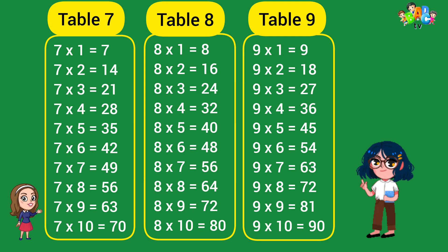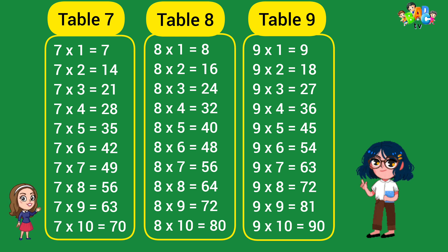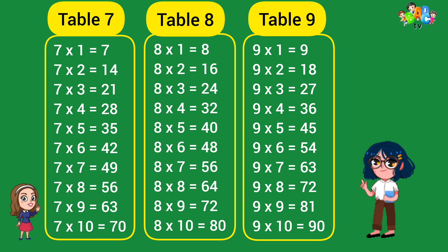7-1 jar 7, 7-2 jar 14, 7-3 jar 21, 7-4 jar 28, 7-5 jar 35, 7-6 jar 42, 7-7 jar 49, 7-8 jar 56, 7-9 jar 63, 7-10 jar 70.